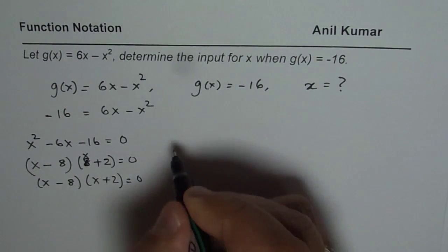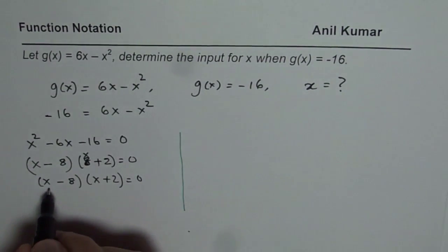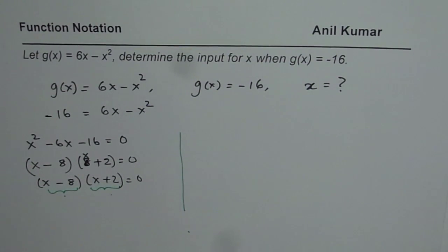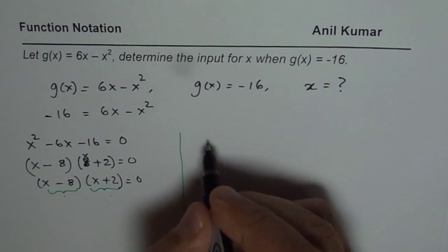Once you factor, you can write down the answer. From the factored form, one factor will give one answer, the other factor will give another answer. So we have two separate answers. Let us solve them.